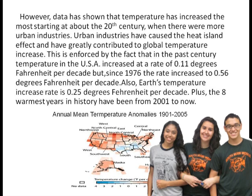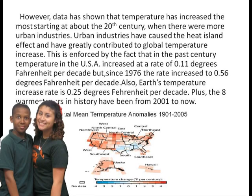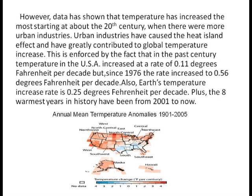Urban industries have caused the heat island effect and have greatly contributed to global temperature increase. The past century's U.S. temperature increased at a rate of 0.11 degrees Fahrenheit per decade, but since 1976 the rate has increased to 0.56 degrees Fahrenheit per decade. Earth's overall temperature increases at 0.25 degrees Fahrenheit per decade. The eight warmest years in history have been from 2001 until now.